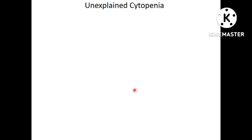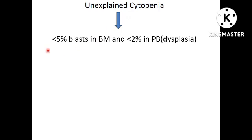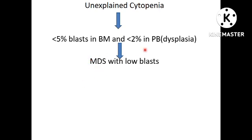An attempt has been made to simplify the diagnostic approach to MDS incorporating all these changes. Consider a case scenario with unexplained cytopenia lasting more than 4 months. On morphological evaluation, if you see less than 5% blast in the marrow and less than 2% in the peripheral blood with dysplasia — the cutoff for dysplasia remains 10% for all lineages — you can morphologically diagnose it as MDS with low blast.